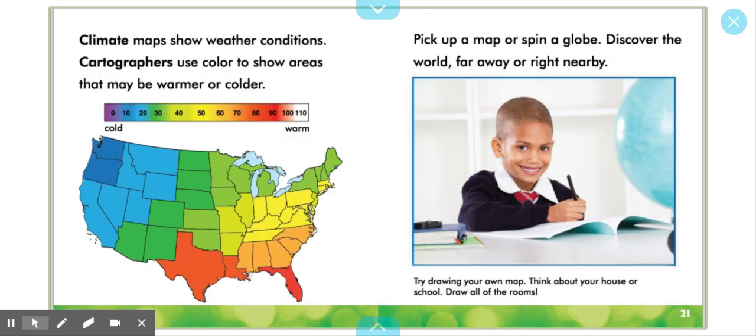Climate maps show weather conditions. Cartographers use color to show areas that may be warmer or colder. Pick up a map or spin a globe. Discover the world far away or right nearby.